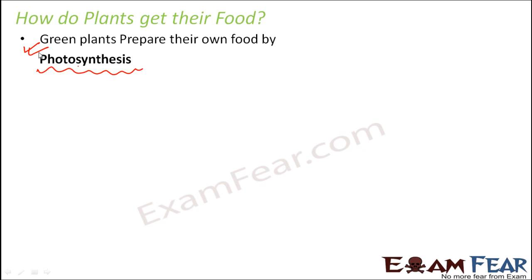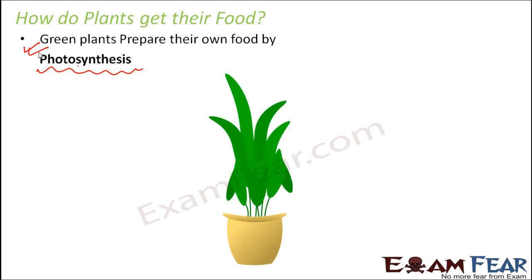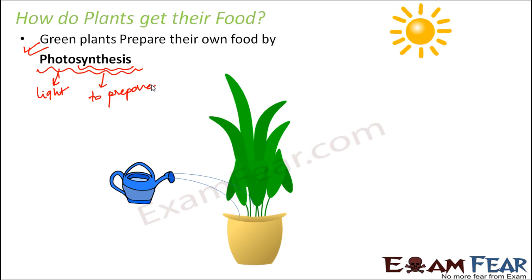But when we talk about plants, they prepare their own food by this process called photosynthesis. So what is photosynthesis? It is a process where the word 'photo' means light and the word 'synthesis' means to prepare, to synthesize. So preparing food in the presence of sunlight is what is called photosynthesis. That is why we say that water and sunlight are very, very important for the survival of a plant.